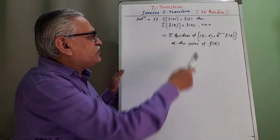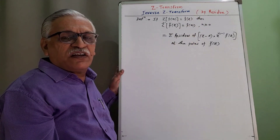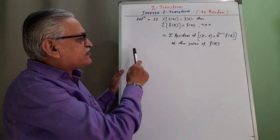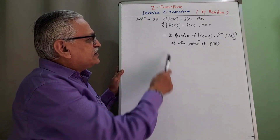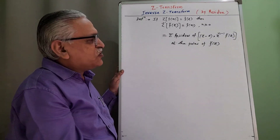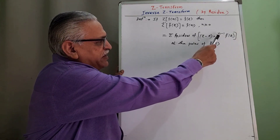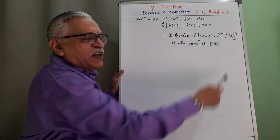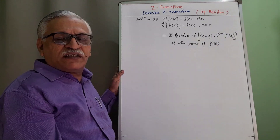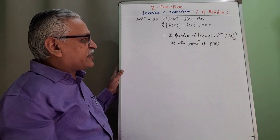To determine this inverse Z transform we are using the residue technique. The first form is: inverse Z transform equals the sum of residues of (Z − A) multiplied by Z raised to N−1 into F̄(Z) at the poles of F̄(Z). If all the poles are simple poles, we use this technique.